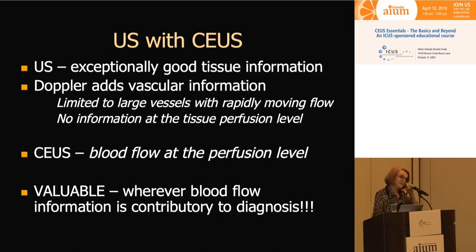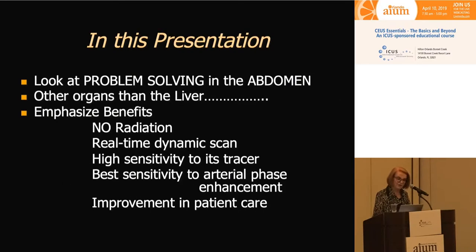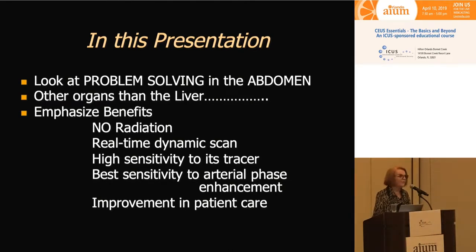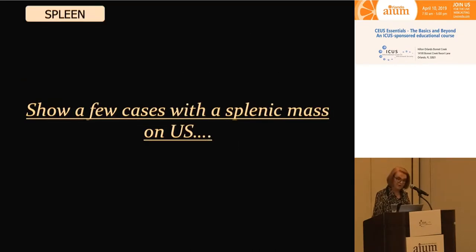Doppler doesn't give us information at the tissue perfusion level. Contrast-enhanced ultrasound is a great advantage in that it allows us to see blood flow at the perfusion level. This is valuable whenever blood flow information is contributory to diagnosis. In this presentation, we'll look at problem solving in the abdomen for organs other than the liver, emphasizing the benefits: no radiation, real-time dynamic scanning, very high sensitivity to its tracer, and overall improvement in patient care.